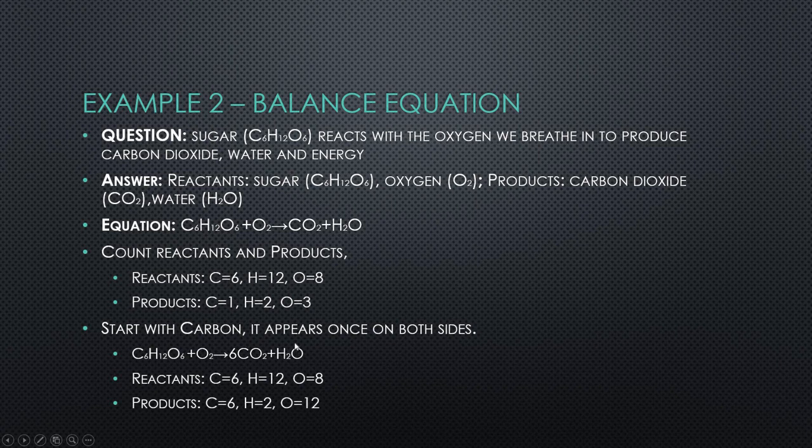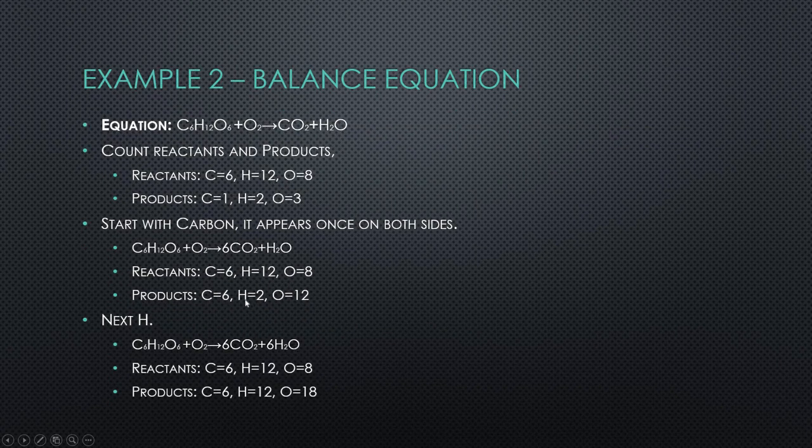Next step, let's look at hydrogen next. So hydrogen is next. We can see, we need to get from 2 we need to get to 12. So we've got the hydrogens here. So if you put a 6 in front, we're going to get 12. If you do that then we have now 6 carbons, 6 carbons, 12 hydrogens, 12 hydrogens.